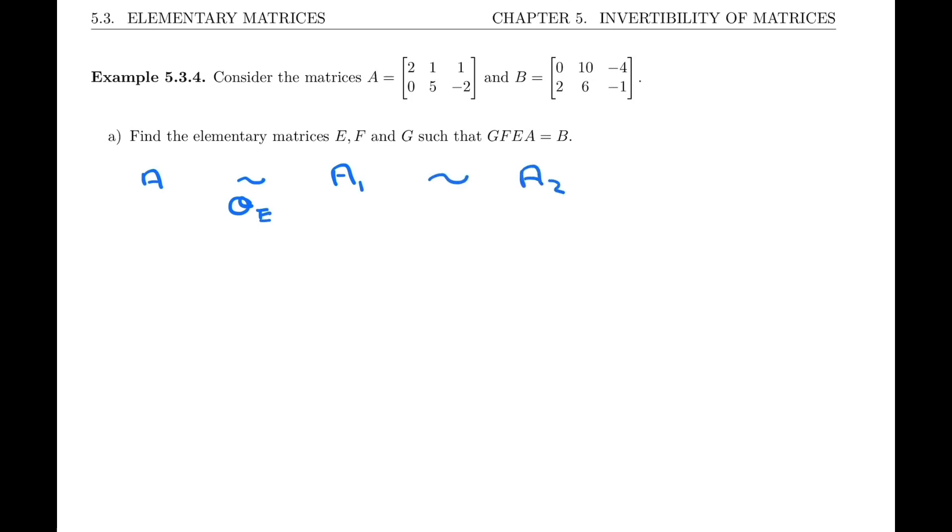And then we're going to need another operation corresponding to matrix F, so I'm going to call it OF. And finally, a third operation that's going to turn A2 into B, and we're going to call that OG. We know it's three operations because we're asked to find three elementary matrices.